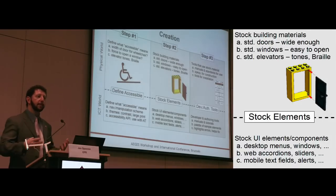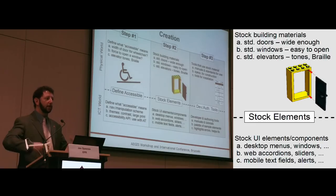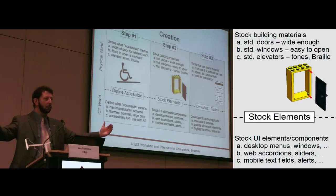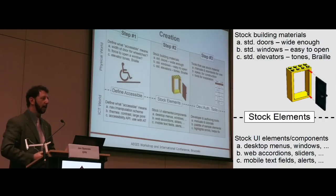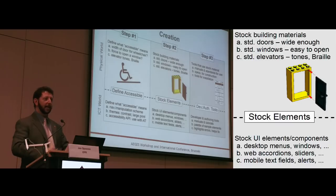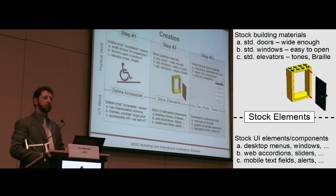The second step in creating an accessible world is having stock building components ready to go. When I go to grab a door from the hardware store, that door should already be wide enough to fit a wheelchair. When I get an elevator from the Otis Elevator Company, it should be built already with the tones in it. When I get the plate with all of the numbers for the floors, it should already have Braille on the plate.